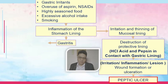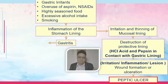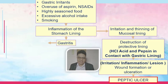However, because of irritation and inflammation — because of the things we take — this protective lining is already destroyed in gastritis. Hence, the hydrochloric acid and pepsin, which are potent acids, are now in direct contact with the lining. There is no more mucosal barrier to protect the stomach from its own acid. That leads to irritation, inflammation, and lesions, and later on there may be wound formation leading to ulceration.